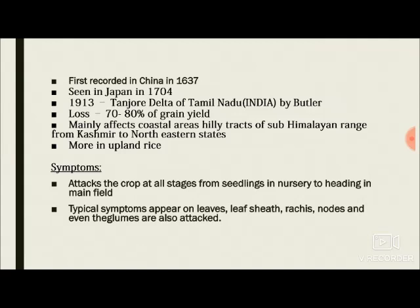What are the areas affected by this disease? It mainly affects the coastal areas: Odisha, West Bengal, Kerala, and Tamil Nadu. The hilly tracts of the sub-Himalayan range — that is the lower Himalayan range — and the northeastern states like Meghalaya and Assam, which also cultivate rice in huge amounts, are also affected by this disease.